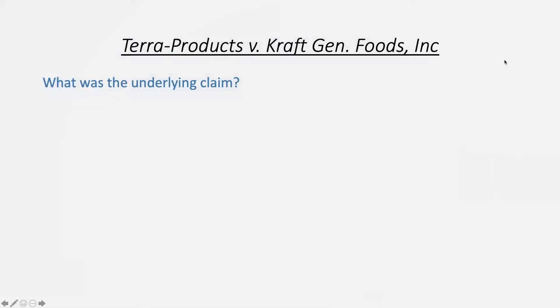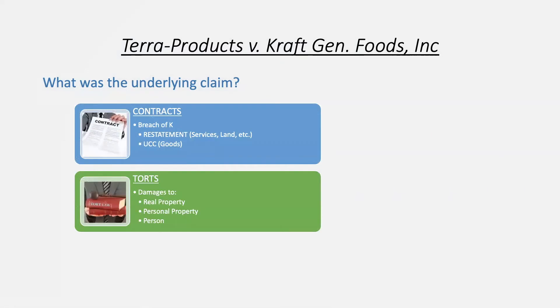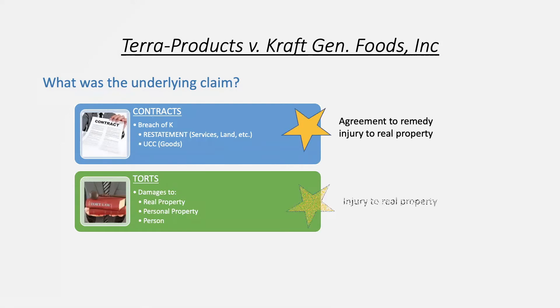The case Terra Products versus Kraft helped us determine these rules. The underlying claim involved both contracts and torts, because there was an agreement to remedy injury to real property as well as an actual injury to real property. This case is really complicated, so it'll be helpful to timeline what actually happened.